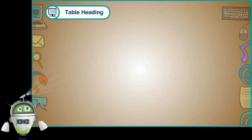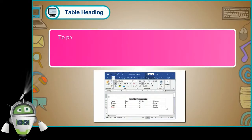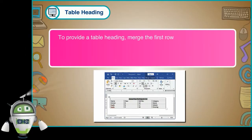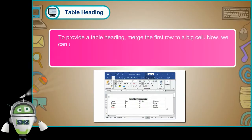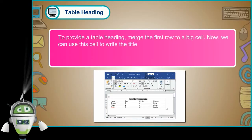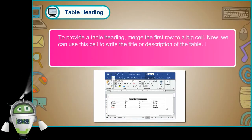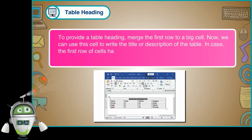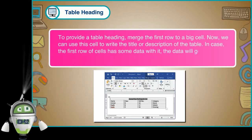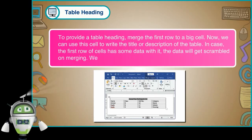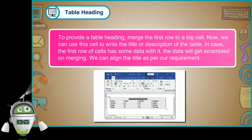Table Heading. To provide a table heading, merge the first row into one big cell. We can then use this cell to write the title or description of the table. In case the first row of cells has some data, the data will get scrambled on merging. We can align the title as per our requirement.